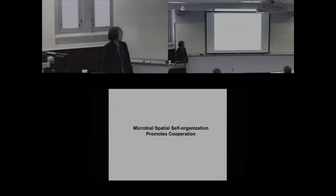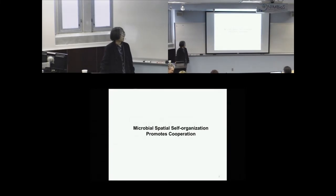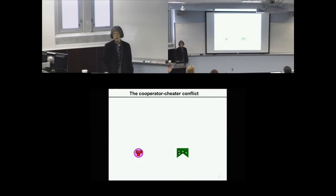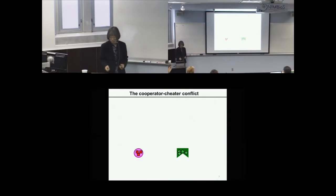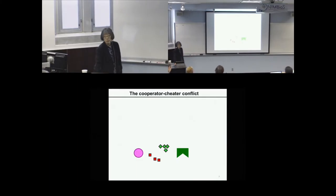I would like to talk about how microbial spatial self-organization promotes cooperation. In nature, we often find species cooperating with each other. For example, each species will produce a benefit that is used by the partner species.